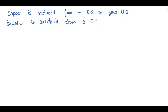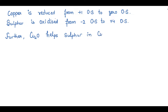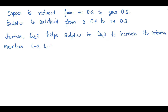Sulfur changes from a −2 oxidation state to a +4 oxidation state. Looking at the reaction, it is confirmed to be a redox reaction. Next we have to find the oxidant and reductant. Copper oxide helps sulfur in copper sulfide to increase its oxidation number from −2 to +4.